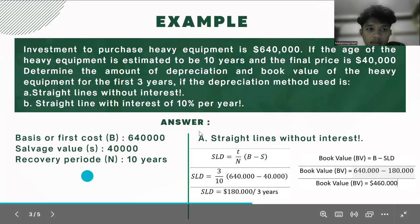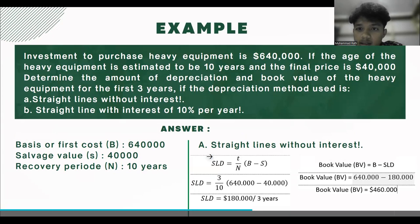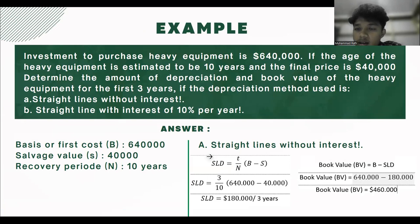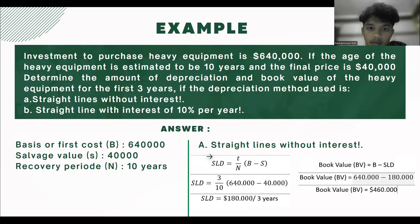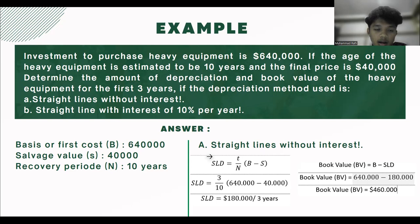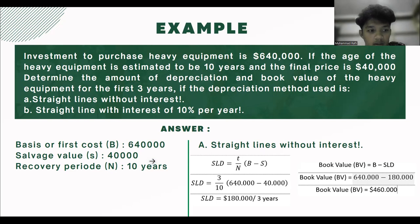For the example, investment to purchase heavy equipment is $640,000. If the age of the heavy equipment is estimated to be 10 years and the final price is $40,000, determine the amount of depreciation and book value of the heavy equipment for the first 3 years, using (a) straight-line without interest and (b) straight-line with interest of 10% per year. Based on the problem, we know: first cost = $640,000, salvage value = $40,000, and recovery period = 10 years.